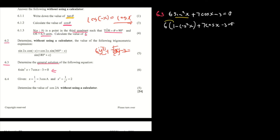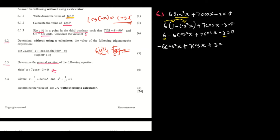This 6 will multiply everything inside the bracket, so you're going to have 6 minus 6 cos² x plus 7 cos x minus 3 equals 0. Then plus 6 minus 3 gives us: minus 6 cos² x plus 7 cos x plus 3 equals 0.